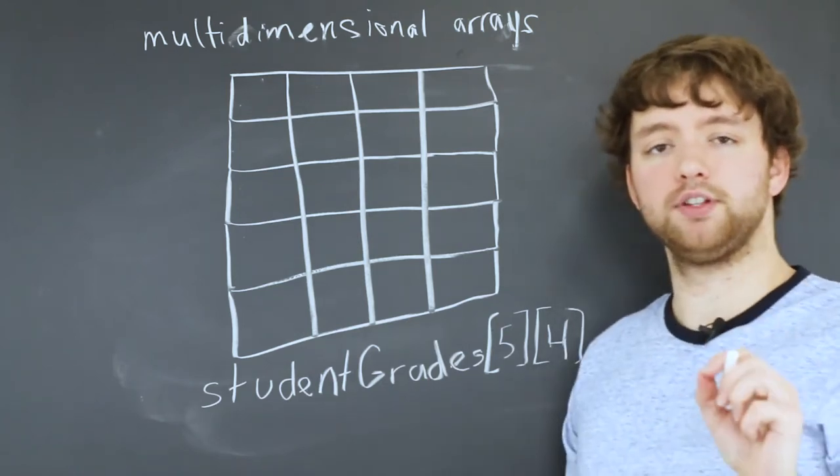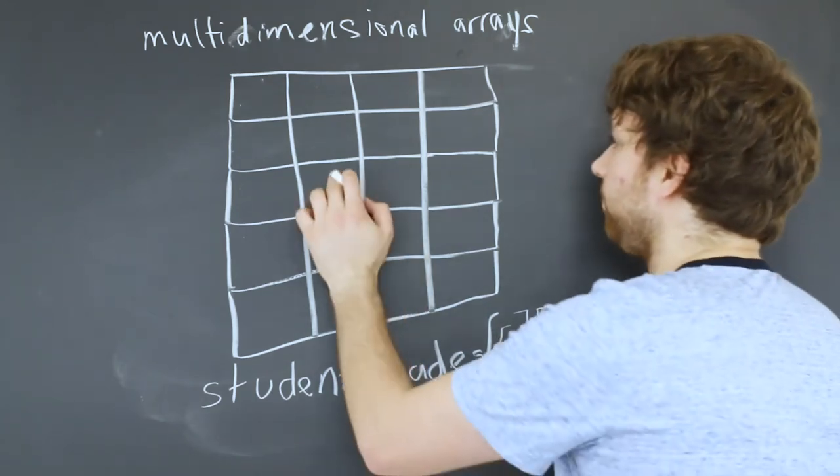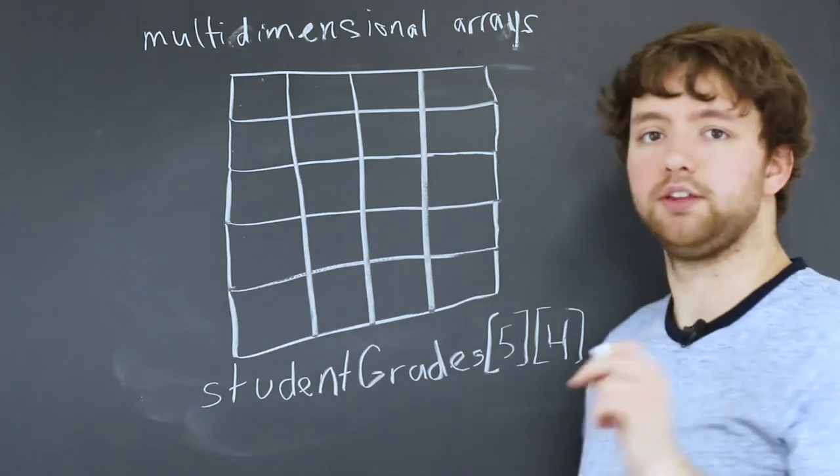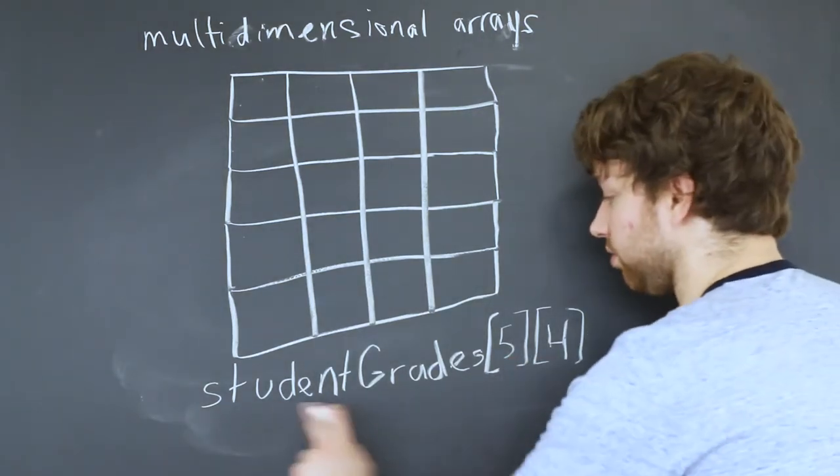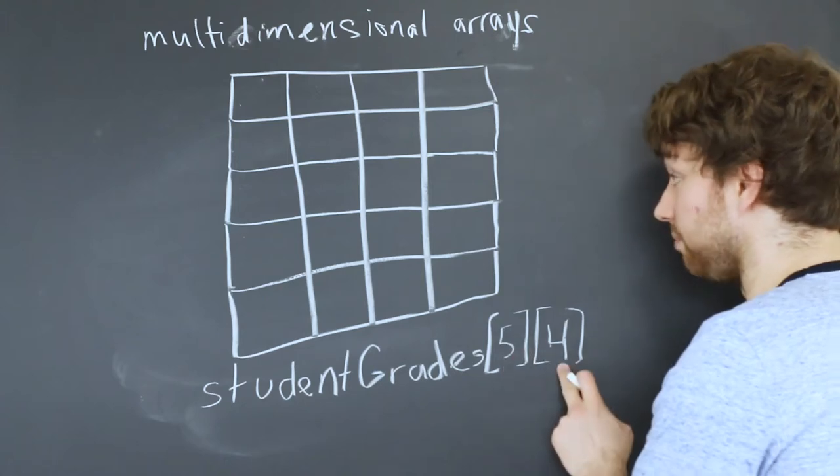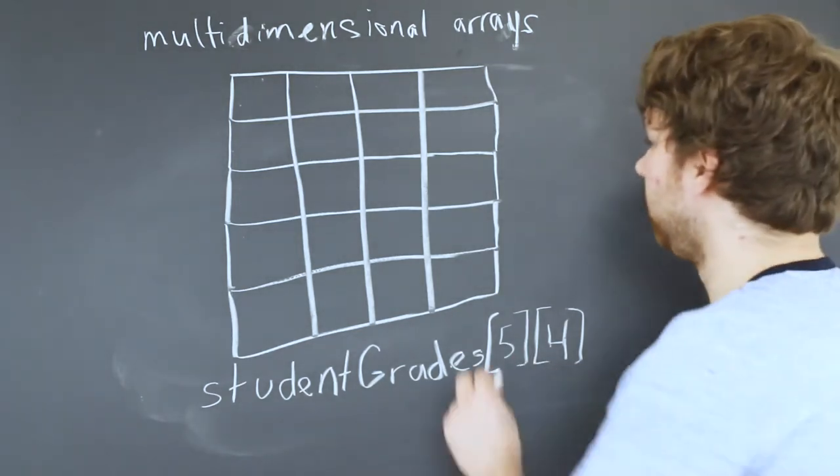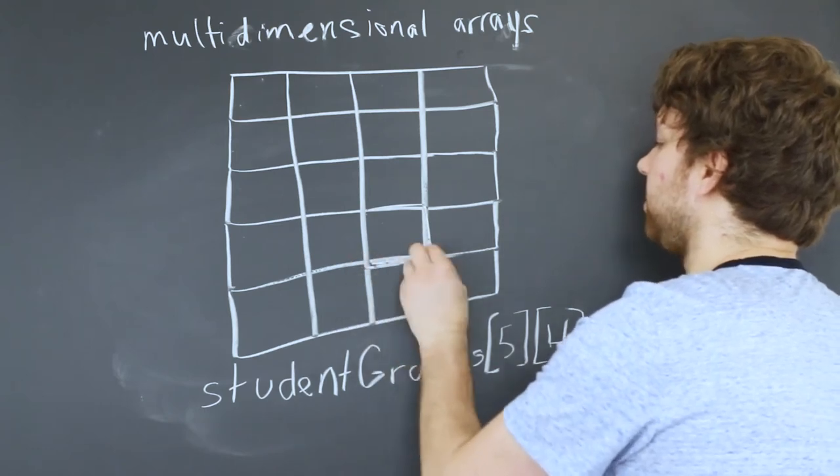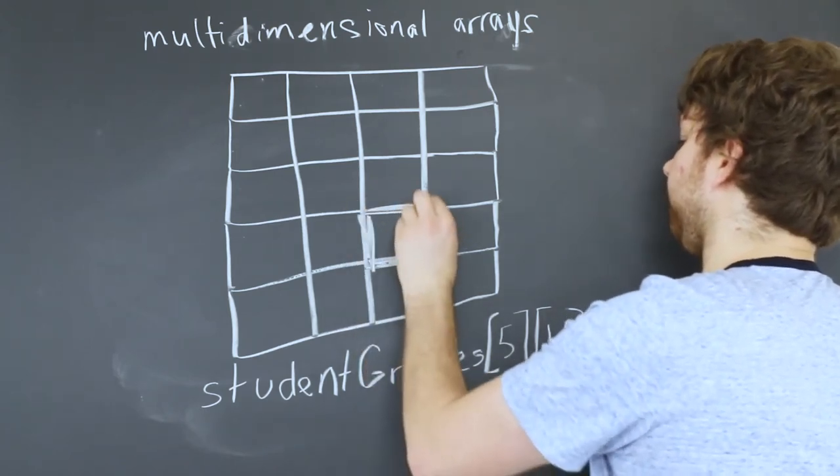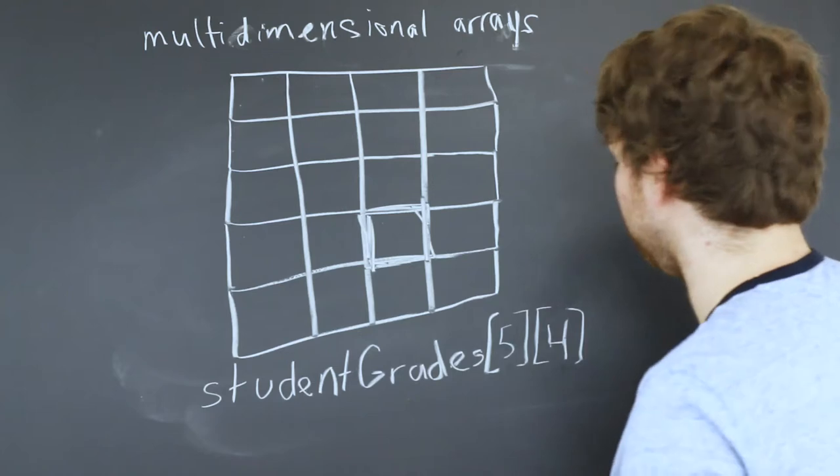So this would give us this structure, which we can visualize in our head. But if you wanted to reference a specific row or a specific column, then you need to think what are we going to put when we're referencing it. We're going to put student grades, and then we're going to put something here and something here. For example, let's say we wanted to reference this cube, or this cell, right here.